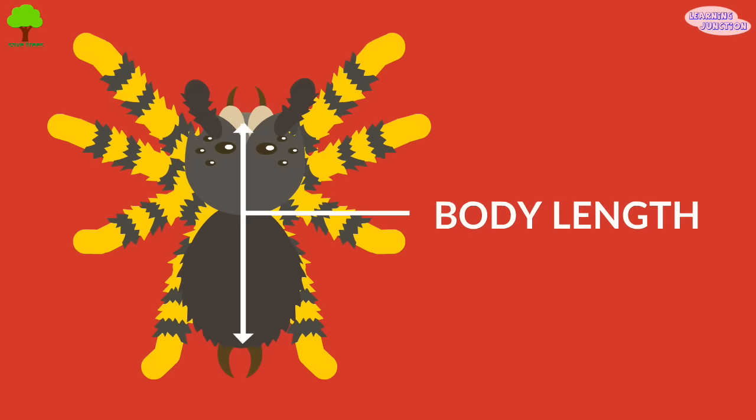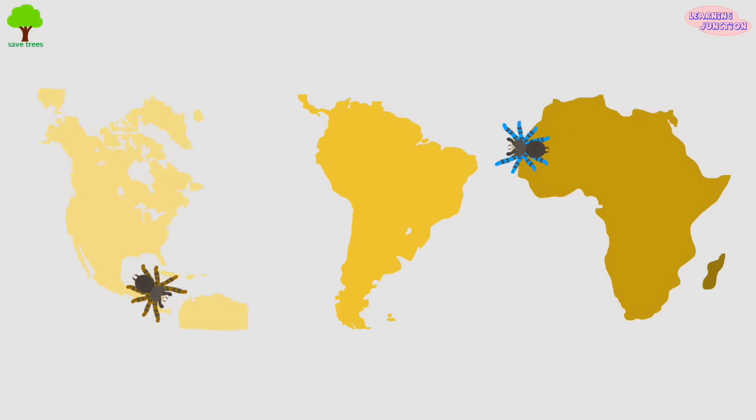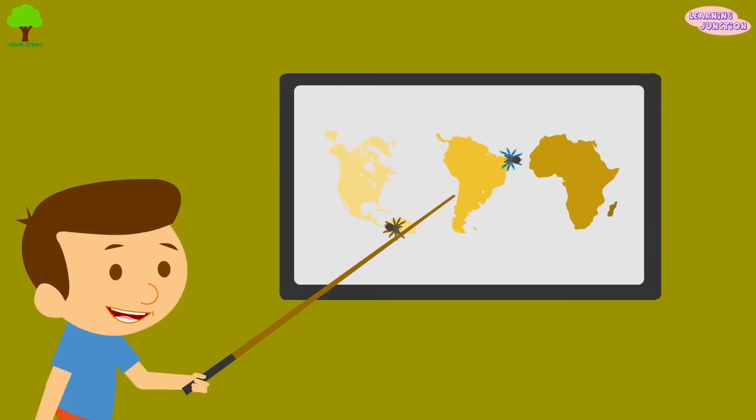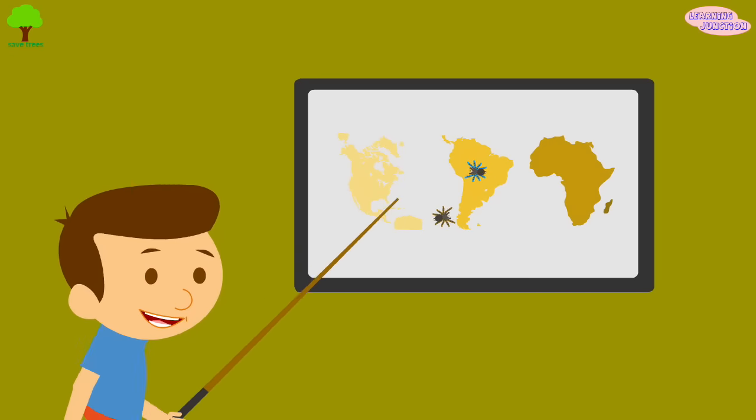A tarantula's body length varies from one to four inches, while their leg span varies from three to ten inches. They are found in the rainforests of South America, Central America, southern part of North America, and in Africa.